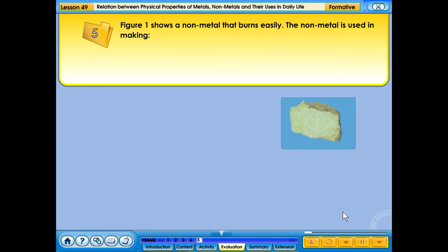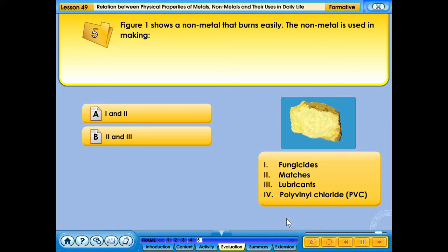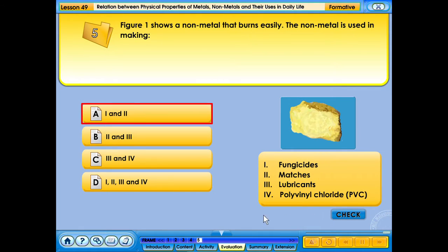Figure 1 shows a non-metal that burns easily. The non-metal is used in making: 1. Fungicides. 2. Matches. 3. Lubricants. 4. Polyvinyl chloride or PVC. Your answer is correct.